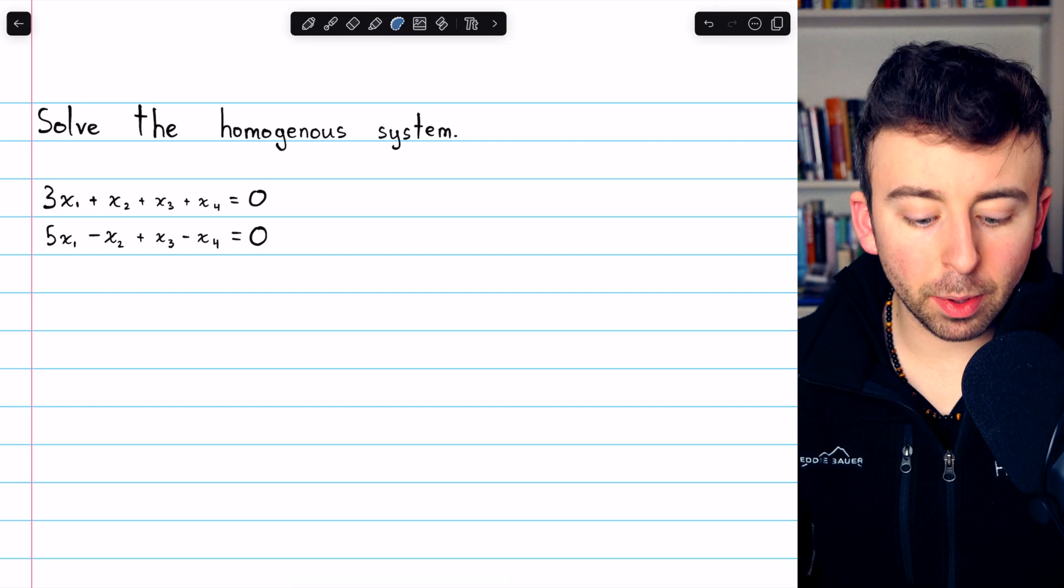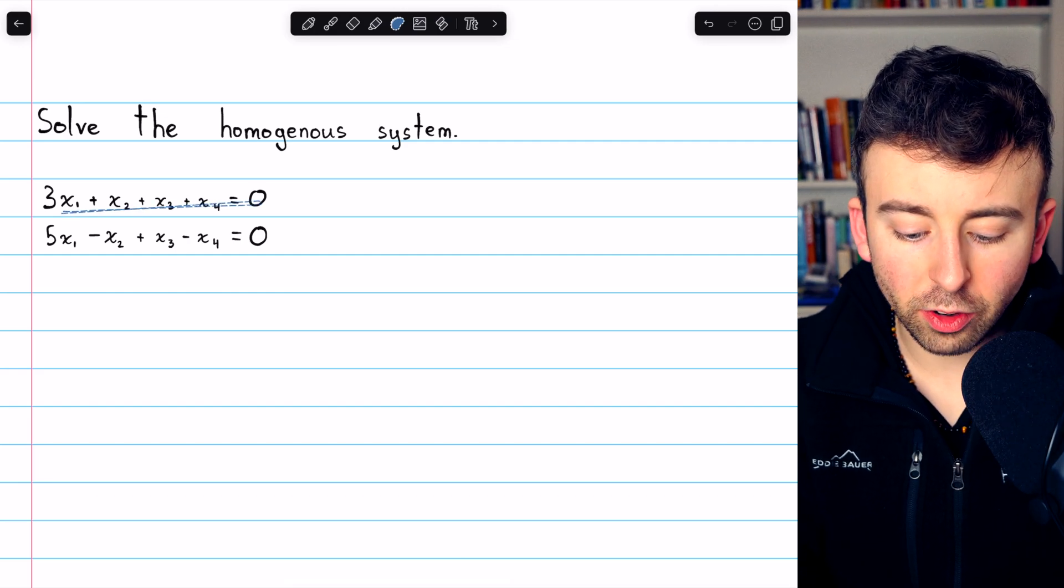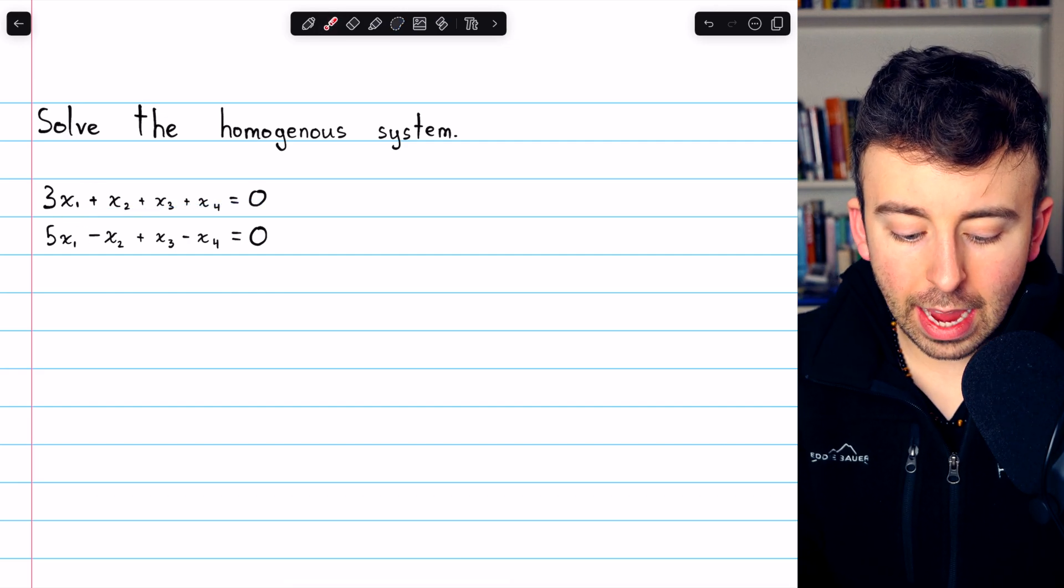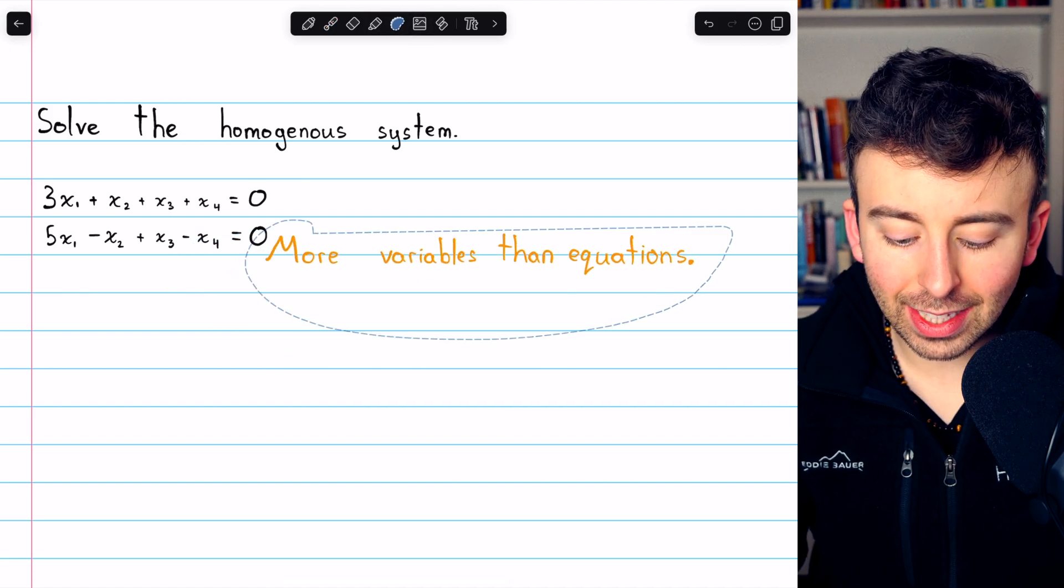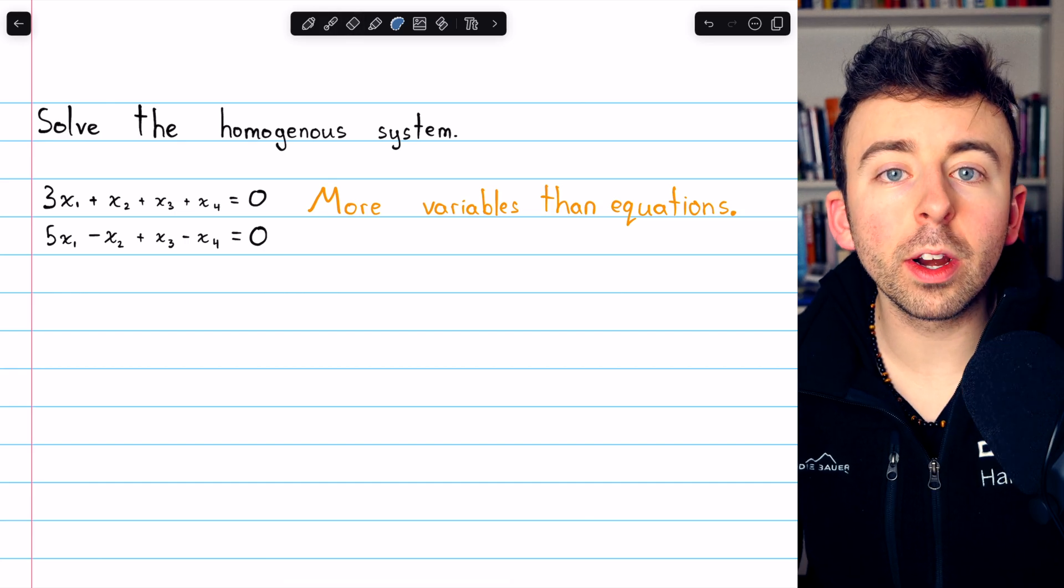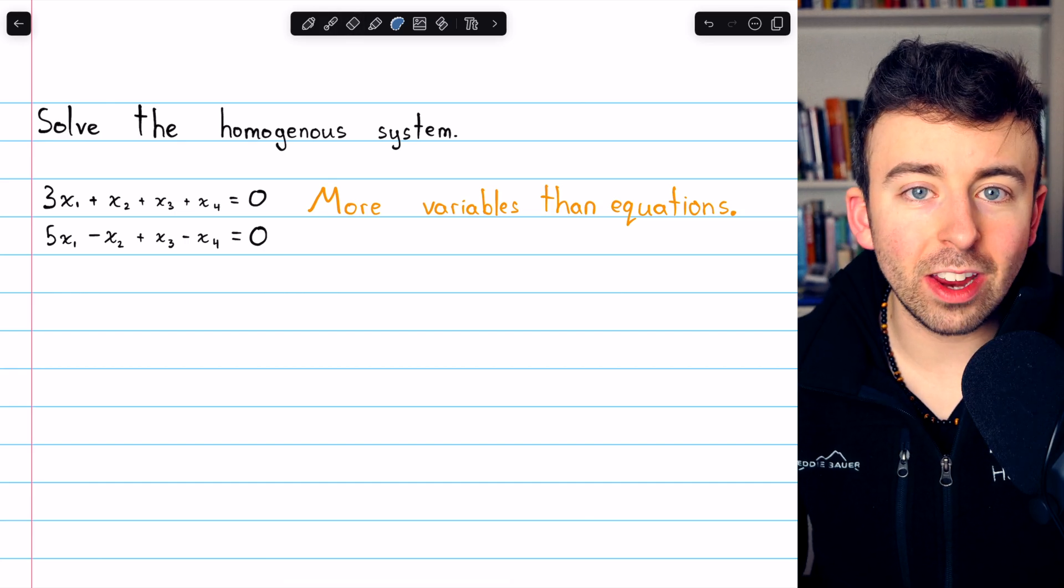Here is our second example. We have two equations in this system and one, two, three, four variables. So you should immediately notice that in this case, we have more variables than equations.